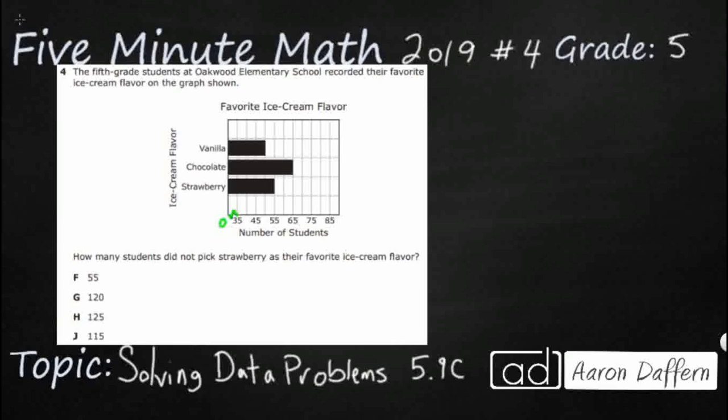But once we start at 35, we have a fairly regular pace. We've got 35, then they skip a number, 45, skip a number, 55, and so on. And so we can see what some of these skipped numbers are here. It looks like between 35 and 45.